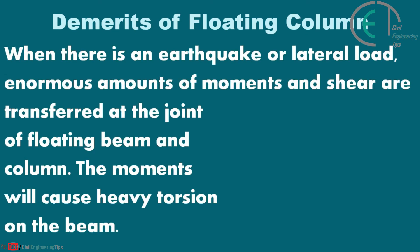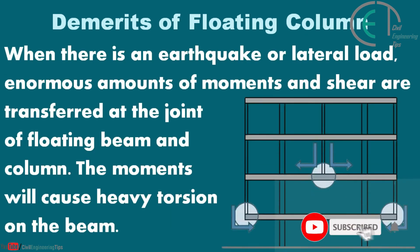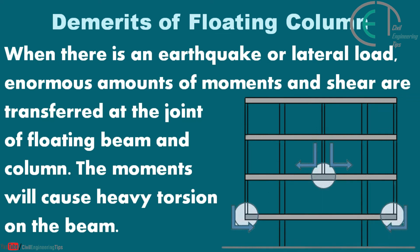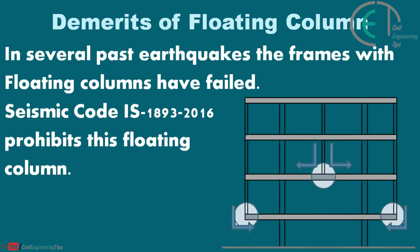There are demerits of using floating columns as well. When there is an earthquake or lateral load, enormous amounts of moments and shear are transferred at the joint of the floating beam and column, and these moments will cause heavy torsion on the beam. In several past earthquakes, frames with floating columns have failed. Seismic code IS 1893:2016 prohibits the use of floating columns.